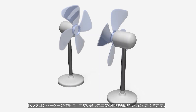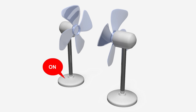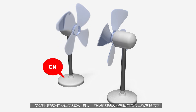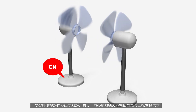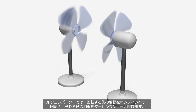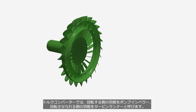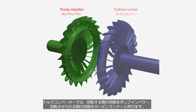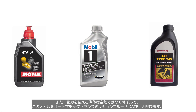The function of a torque converter can be likened to two electric fans facing each other. A fan generates airflow and it hits and rotates the blades of the other fan. In a torque converter, the rotating blades are referred to as the pump impeller, and the blades that are rotated are called the turbine runner. The medium for transmitting power is not air but oil, referred to as Automatic Transmission Fluid, or ATF.